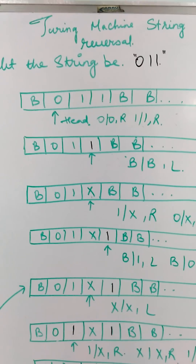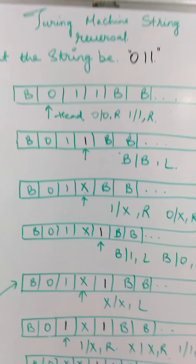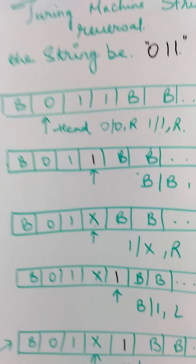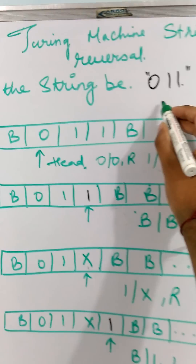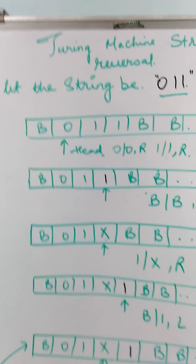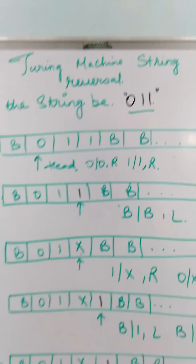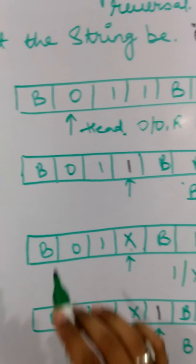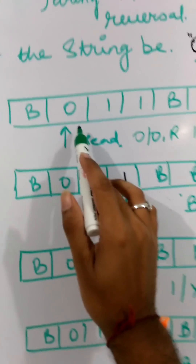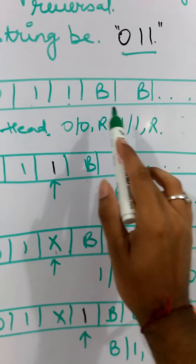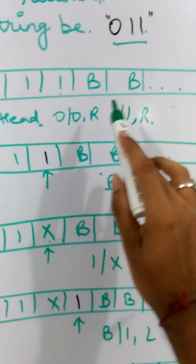Hey, what's up guys, welcome to my new video. In this video I am going to show you how to reverse a string using a Turing machine. This is the string which we have and we are going to reverse it. We have this tape and our head is at this position. We have this input 0 1 1, and after that there are blank spaces.